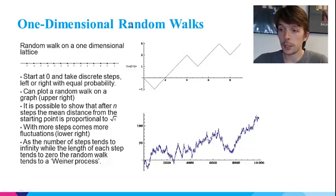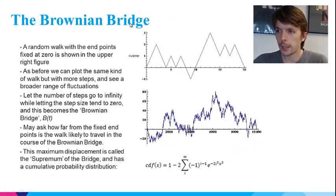If we take the limit that the length of each step tends to zero while the number of steps taken tends to infinity, then the walk becomes what is termed a Wiener process. A related type of random walk is defined by fixing the endpoints to be at zero. One way to make such a walk would be to take some number of right steps and an equal number of left steps, then randomly permute them, then start at zero and follow the randomly ordered steps. Because there's an equal number of left and right steps, you must end up back at zero.